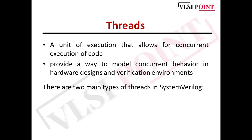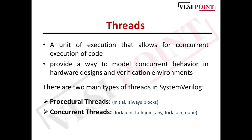There are mainly two types of threads in SystemVerilog: procedural threads and concurrent threads. Procedural threads include initial and always blocks, which were covered in earlier Verilog lectures. In today's video, we will cover concurrent threads in detail. These concurrent threads include fork-join, fork-join any, and fork-join none. Applications include concurrent hardware modeling, testbench writing, parallelism, state machine design, concurrent events, protocol handling, and synchronization.